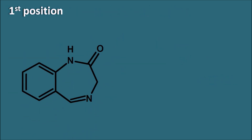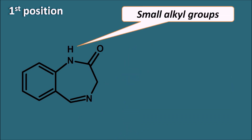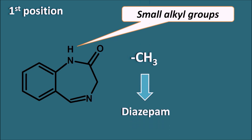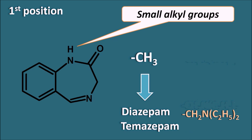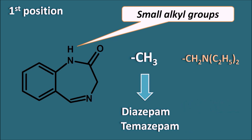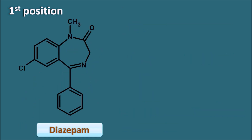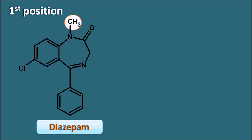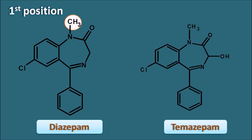At the first position, Benzodiazepines should have a small alkyl group — small alkyl groups are optimal for activity. A methyl group is observed in drugs like Diazepam and Temazepam. In Flurazepam, a -CH₂CH₂ group is observed. Large alkyl groups or aromatic groups like a phenyl group always decrease the activity.